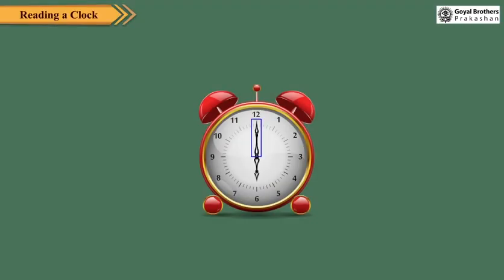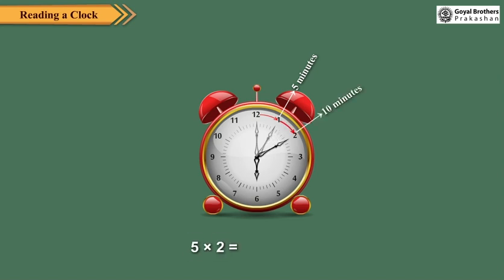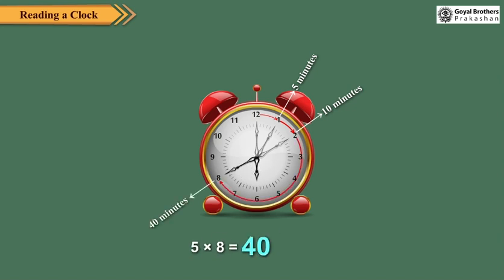We know that the minute hand moves from one number to the next in 5 minutes. So we can find the number of minutes indicated by the minute hand using the multiplication table of 5. If the minute hand is at 2, then it is 5 × 2, which is equal to 10 minutes. If the minute hand is at 8, then it is 5 × 8, which equals 40 minutes.